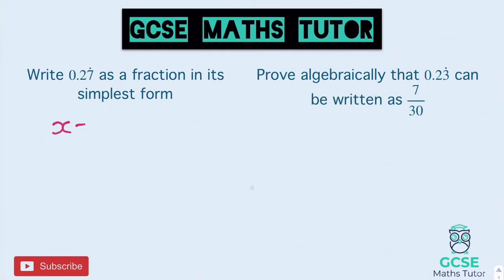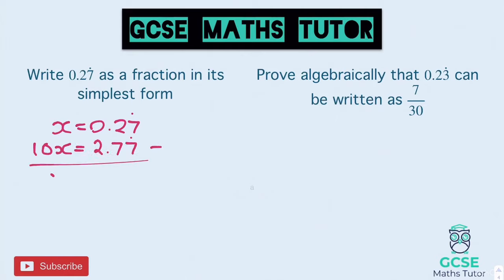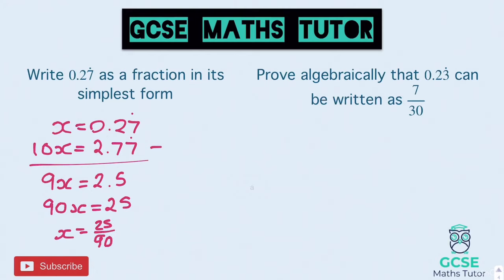For the first one, we've got x equals 0.27 recurring. Times that by 10 and we get 2.77. When you take those away from each other you get 9x equals 2.5. Timesing both sides by 10 gets you 90x equals 25. Dividing by 90 gives x equals 25 over 90, and we just need to simplify that. Both sides divide by 5: 25 divided by 5 gives 5 on the top, and 18 on the bottom. Final answer: 5 over 18. If you type 5 divided by 18 into a calculator you'll see you get 0.27 recurring — a nice check.